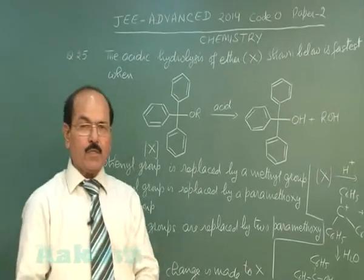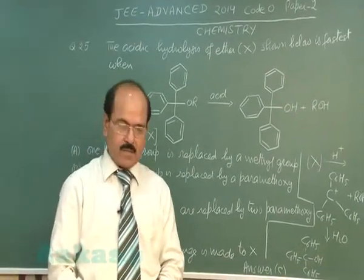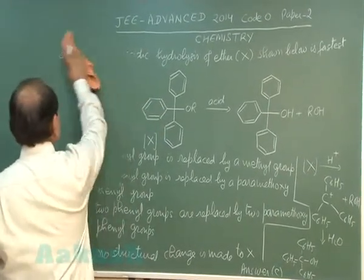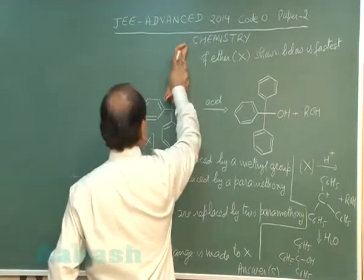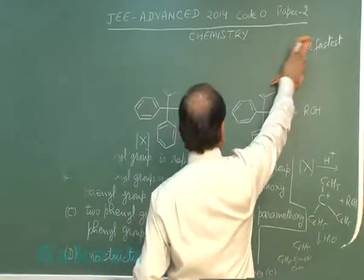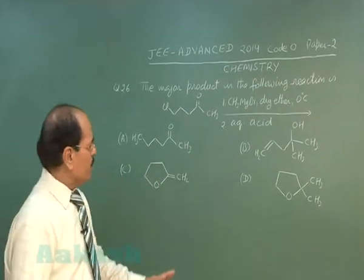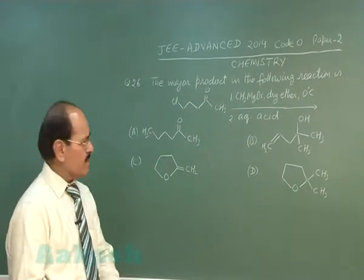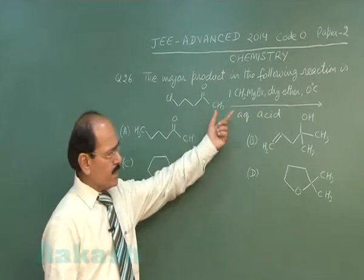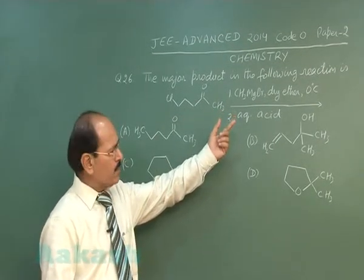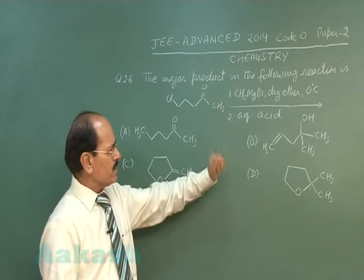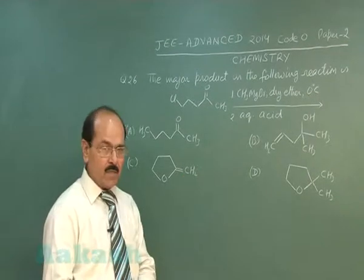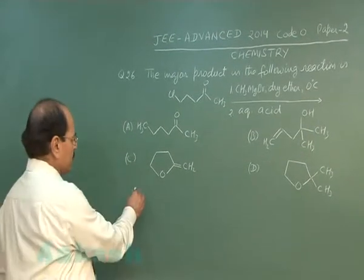We now move on to the next question, that is question number 26. The question says: the major product in the following reaction is — this is the reactant. It is treated with methyl magnesium bromide in the presence of dry ether at 0°C, followed by its reaction with aqueous acid. Four options are given. Now, how does the reaction proceed?